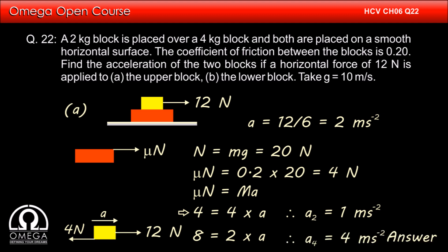So in part A of the question, the block on top will move with an acceleration of 4 m/s² and the lower block will move with 1 m/s². This is our answer.